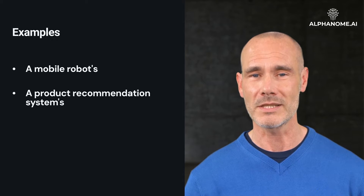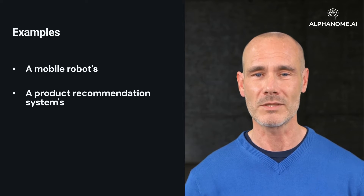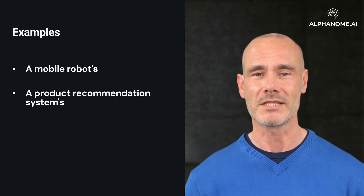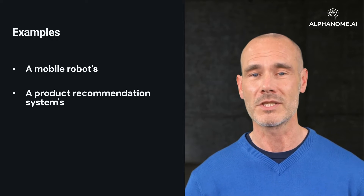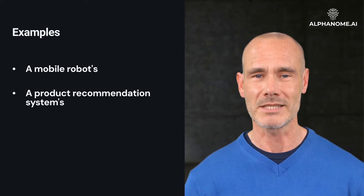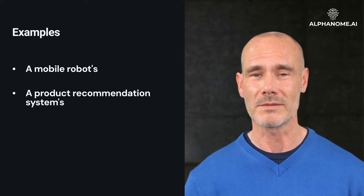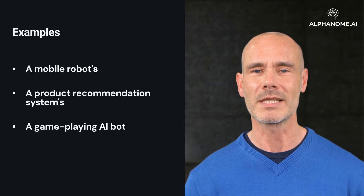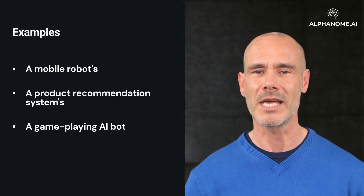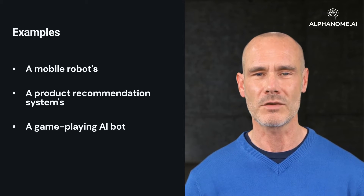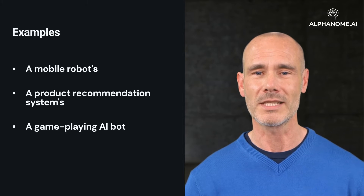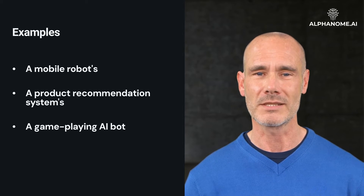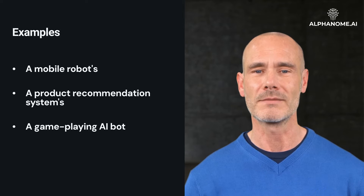A product recommendation system's utility may correlate with a customer's satisfaction or engagement, and it aims to suggest products that will maximize this utility score. A game-playing AI bot has higher utility for winning games and lower utility for losing. It selects moves that it calculates have the best chance of ultimately leading to a victory.